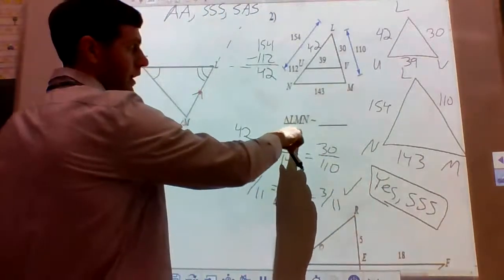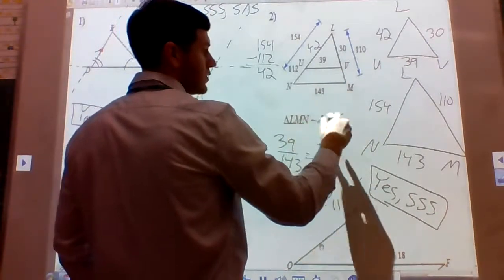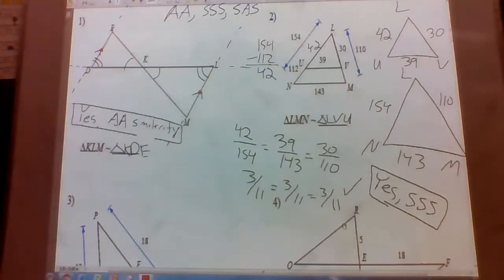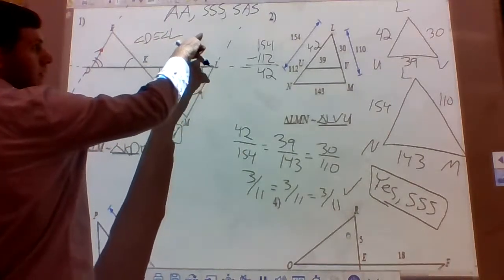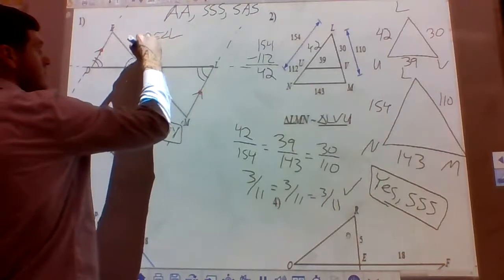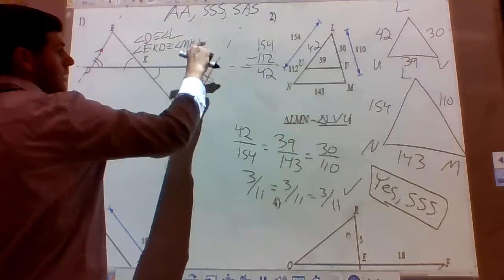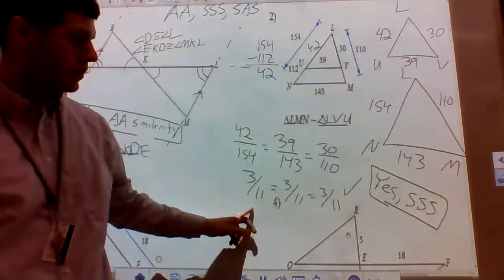The similarity statement is triangle LMN similar to triangle LVU — L corresponds with L, M with V, N with U. To summarize: for problem 1 we found two pairs of congruent angles — angle D congruent to angle L by alternate interior angles, and angle EKD congruent to angle MKL by vertical angles — giving angle-angle similarity. For problem 2, all three side ratios are equal at 3/11, giving side-side-side similarity.